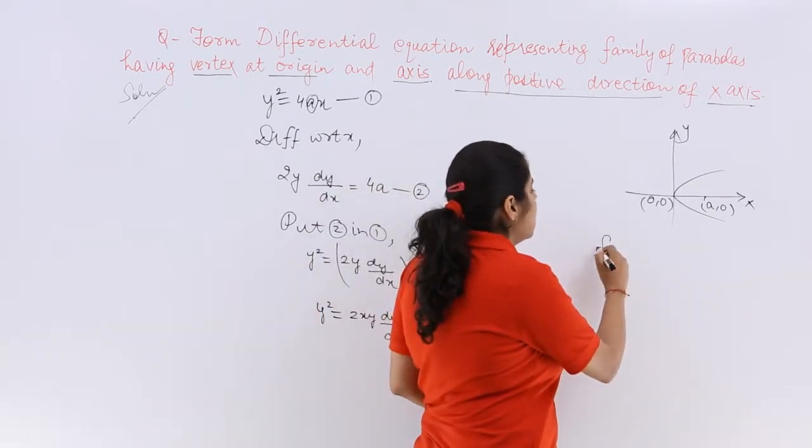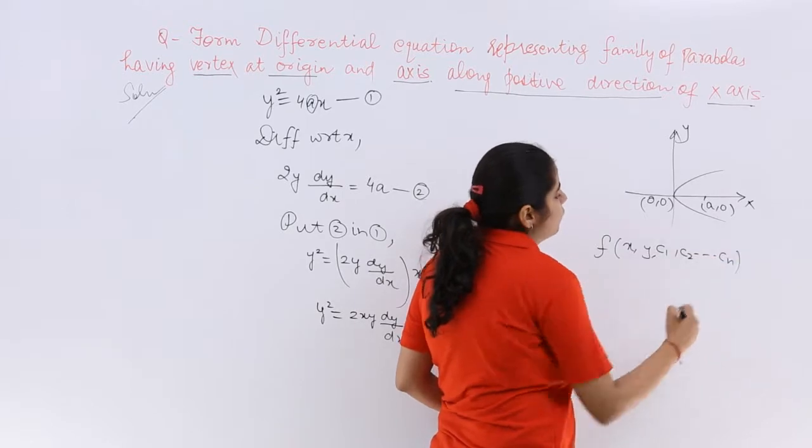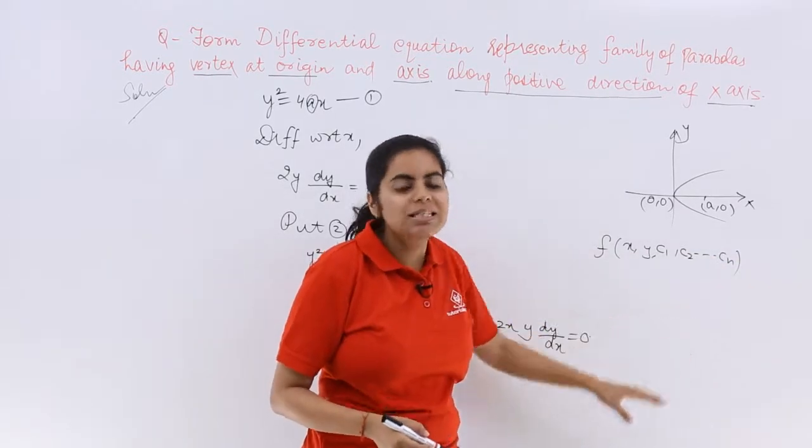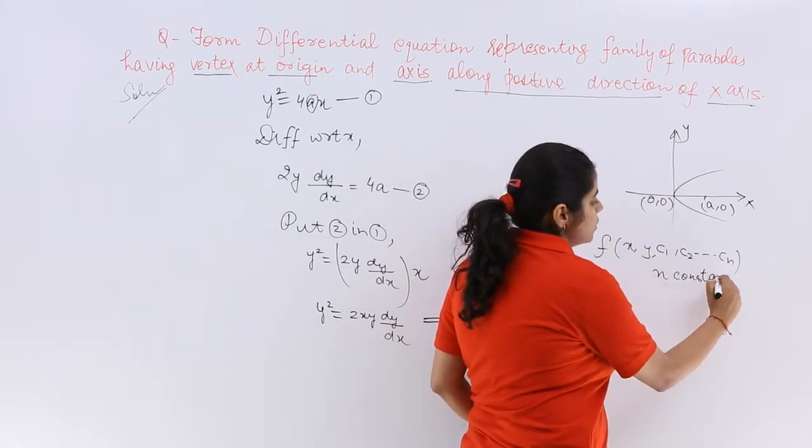if I generalize that I have a given function as f of x, y, c1, c2 and so on, different arbitrary constants till cn, which gives me n constants or n arbitrary constants,